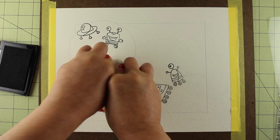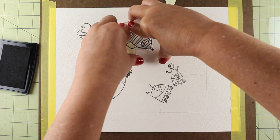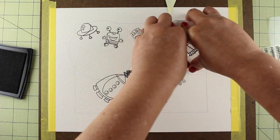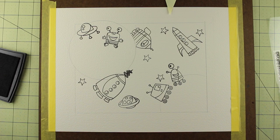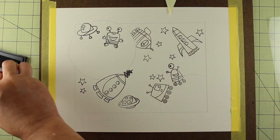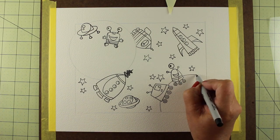I'll be using my Zig Clean Color markers because I wanted a really bright and intense picture. I'm stamping my rocket ships and stars and everything randomly all over this. I did put planets in here so that the ones with wheels and standing with little feet had somewhere to stand.